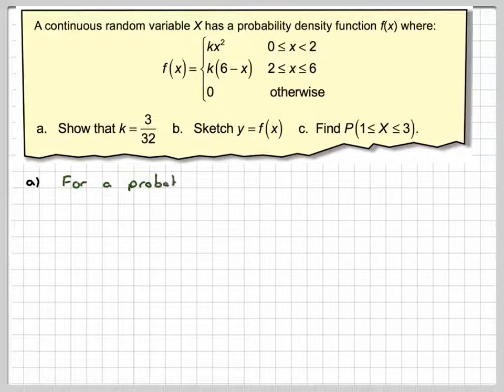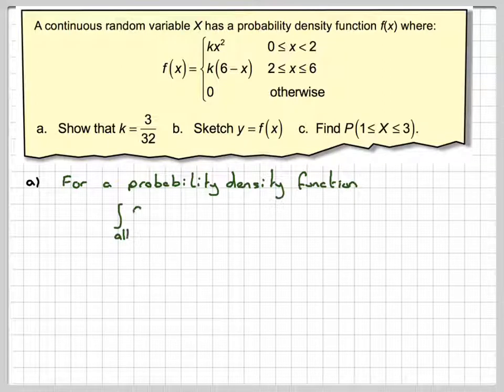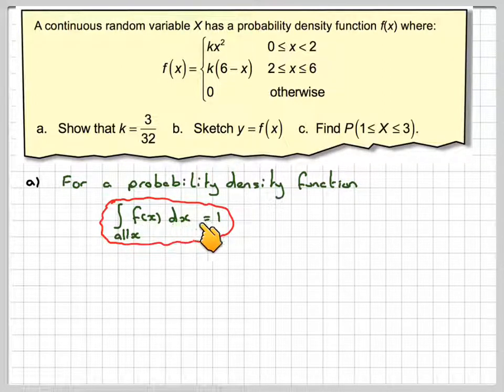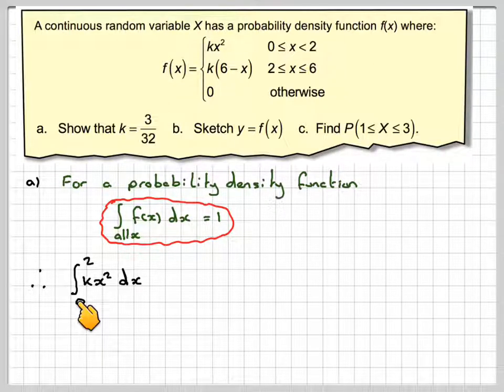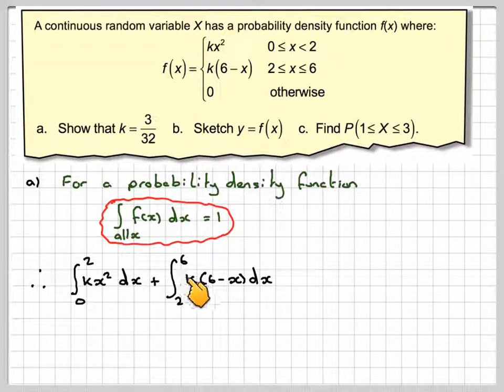So for a probability density function, the integral of all the functions for all values of x dx must be equal to 1. The problem is we've got different values of x, it plays differently between 0 and 2, and 2 and 6. So what we say is the integral between 0 and 2 of kx² dx, the first part, plus the integral from 2 to 6 of k(6-x) dx, the second part, is equal to 1.